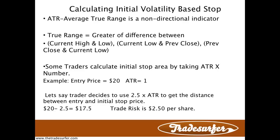True range — Wilder, who created this, defined true range by taking the greater of the difference between either the current high and low, the current low and previous close, or the previous close and the current low. The greater of those becomes your true range. The ATR indicator's default is 14 periods, so the last value is the average of those 14 periods.